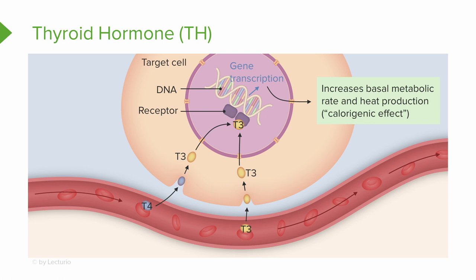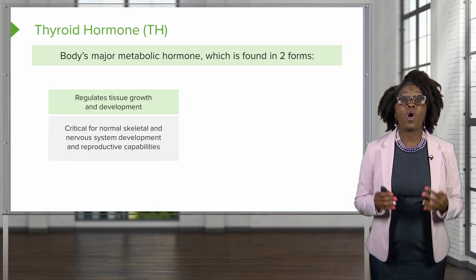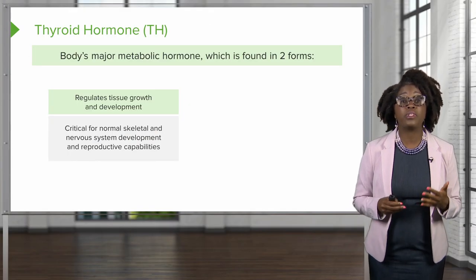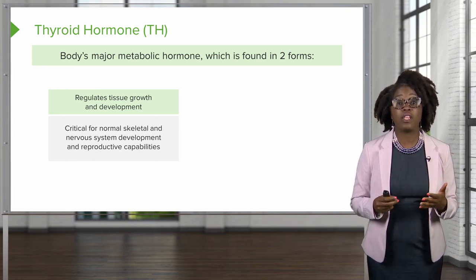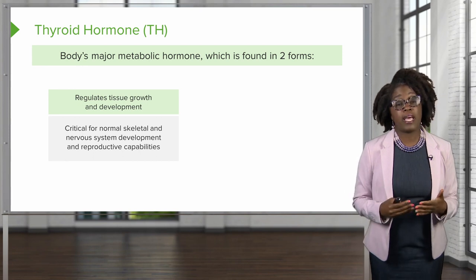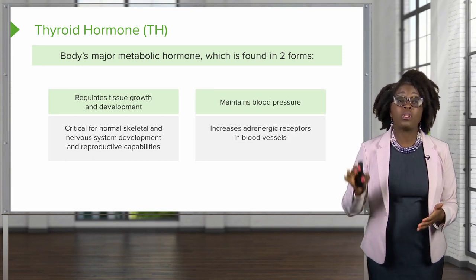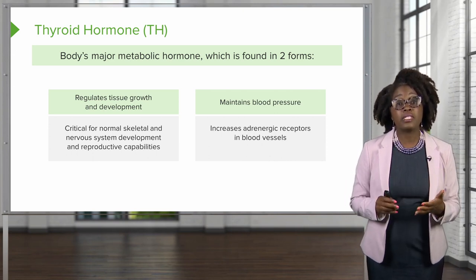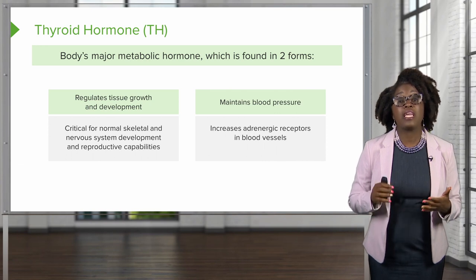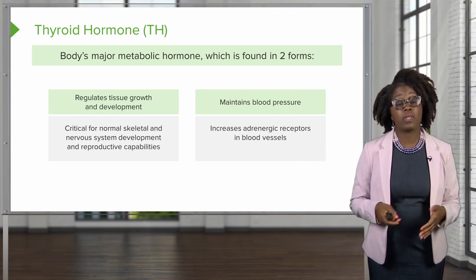The effects of thyroid hormone include an increase in basal metabolic rate and heat production, which we refer to as the calorogenic effect. It also regulates tissue growth and development, and is critical for normal skeletal and nervous system development and reproductive capacities. The thyroid hormone also maintains blood pressure by increasing the adrenergic effect in blood vessels.